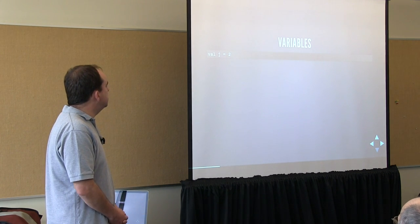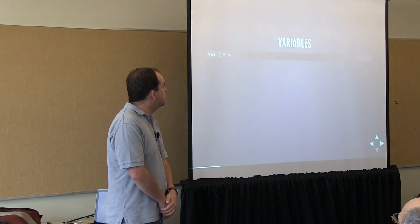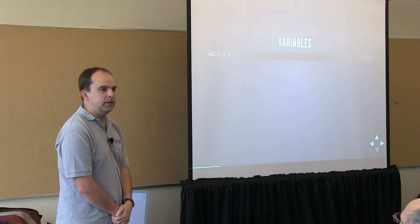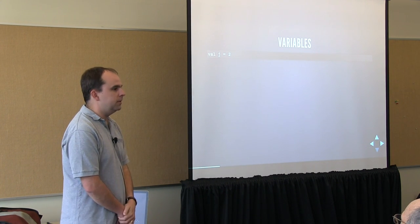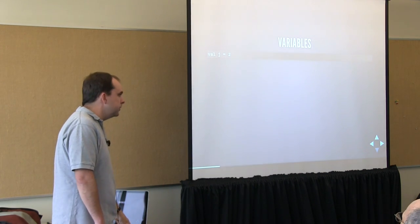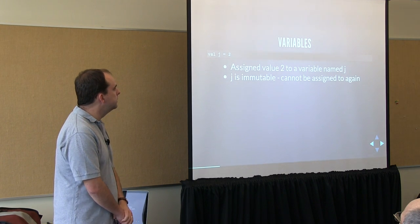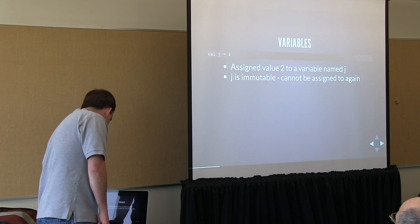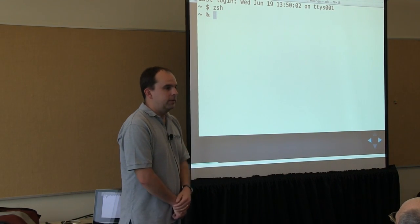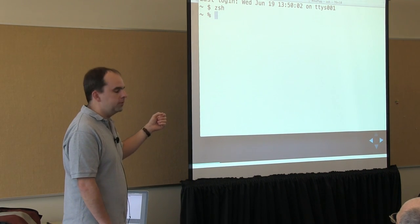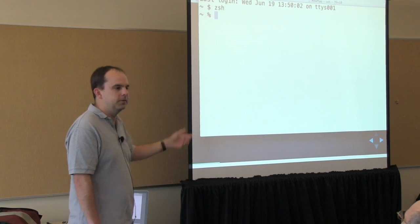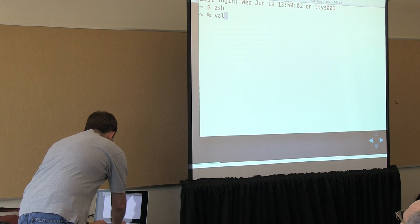Very simple variable assignment in Scala: you just say val j equals 2, for example. Notice that we didn't provide any type for this variable — Scala will infer that the type should be integer because we provided an integer on the right-hand side. Also, saying val means we're creating a variable that is immutable, so we won't be able to reassign to it. I should just go into the Scala REPL at this point. One of the things I really like about Scala is the REPL — it's a really useful tool for playing around with Scala and even Java code.